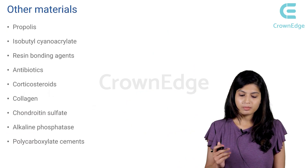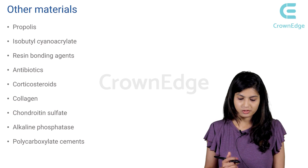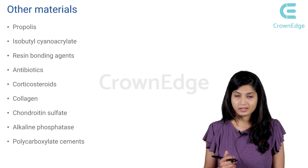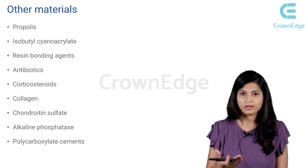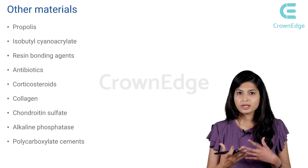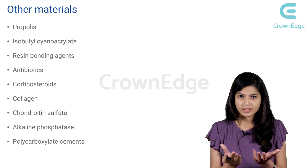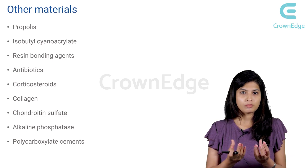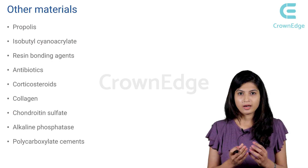Other materials used in pulp capping include propolis, isobutyl cyanoacrylate, resin bonding agents, antibiotics, corticosteroids, collagen, chondroitin sulfate, alkaline phosphatase, and polycarboxylate cements. These are different materials that have been tried over time to stimulate the formation of tertiary dentin, because that is the ultimate aim — to preserve the vitality of the pulp by stimulating odontoblasts externally so that tertiary dentin can be formed.